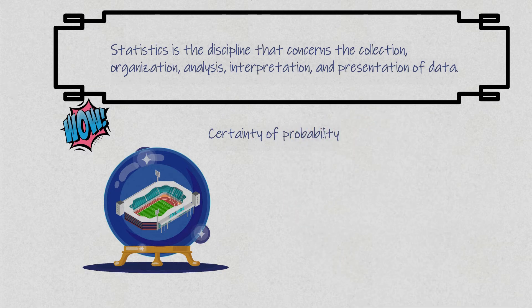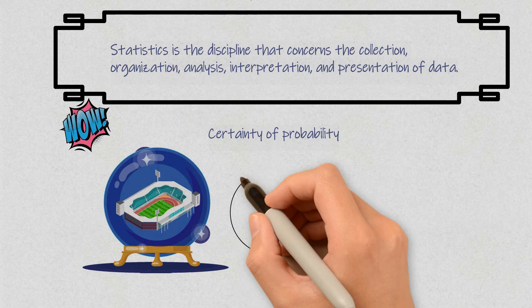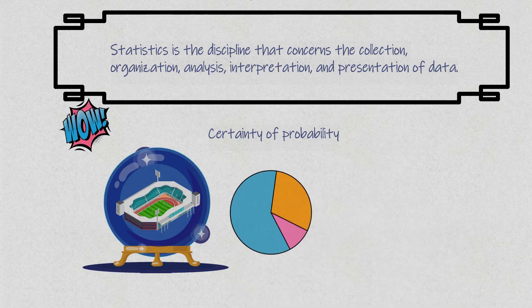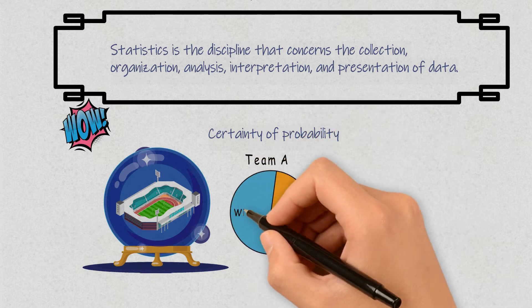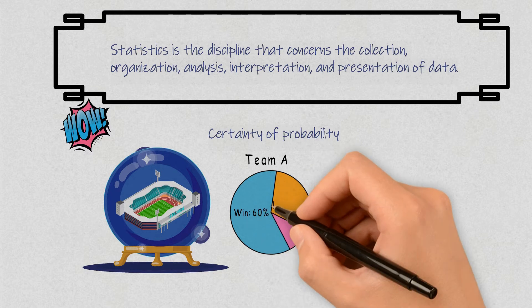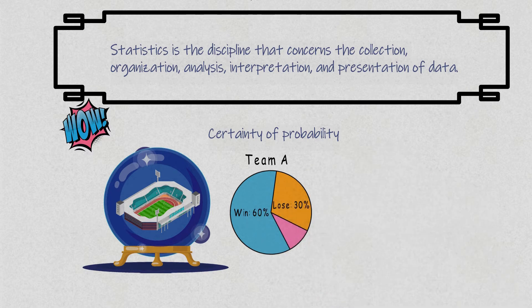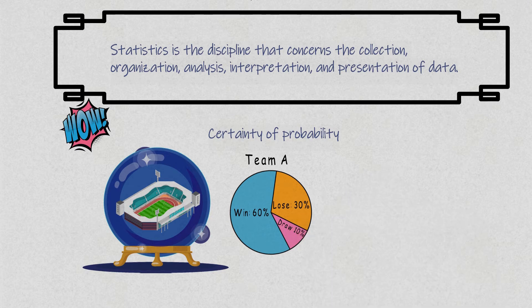Even though the samples you observe show randomness, there is certainty in probability. Think of it this way: in infinite parallel universes, 60% of them will have Team A winning the game, and that percentage won't change.